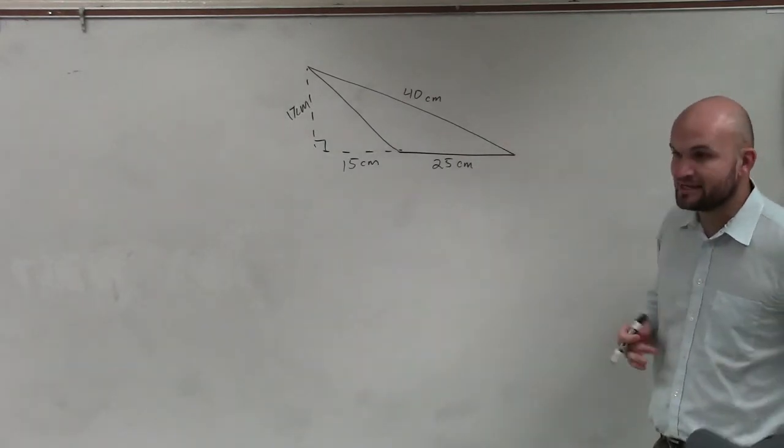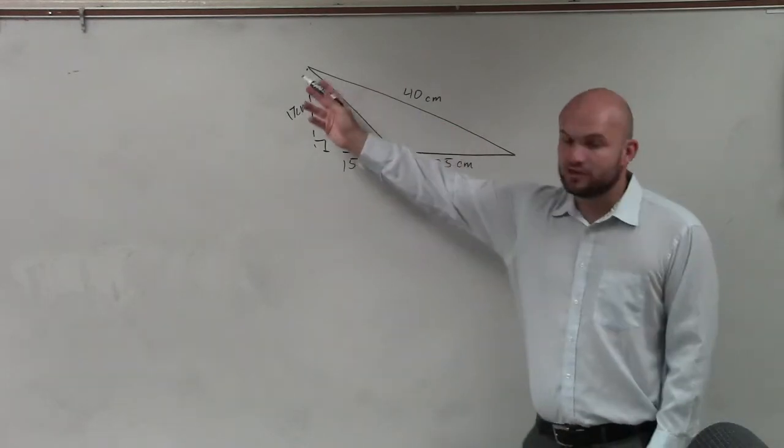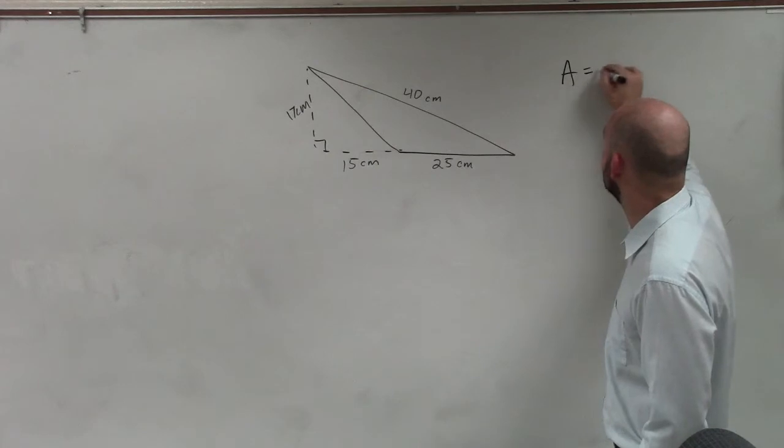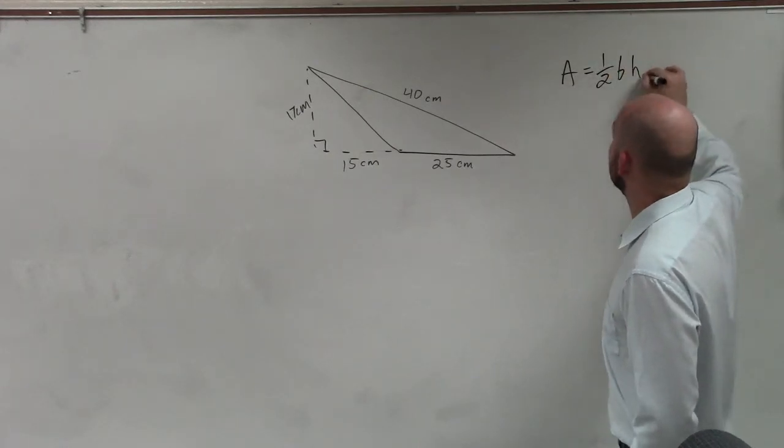So for this one, we need to identify what type of figure do we have. Notice the dark lines is what we're trying to figure out, which is a triangle. So you can say area of the triangle equals one half base times height.